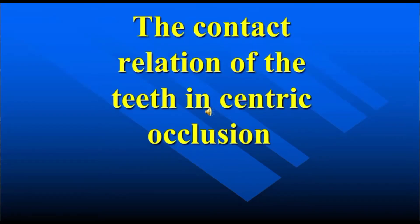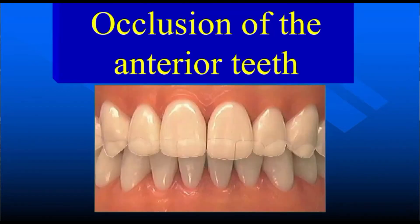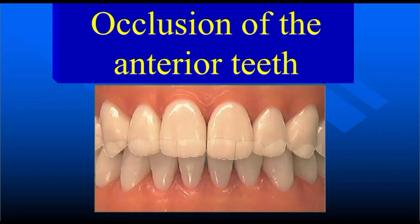In centric occlusion, the upper jaw and lower jaw are in maximum intercuspation. We have to put some force in the temporomandibular joints to keep both dentitions together. The maxillary teeth are always buccal and anterior to the lower dentition, covering part of the lower tooth — usually one third of the lower tooth is covered buccally by the upper tooth.